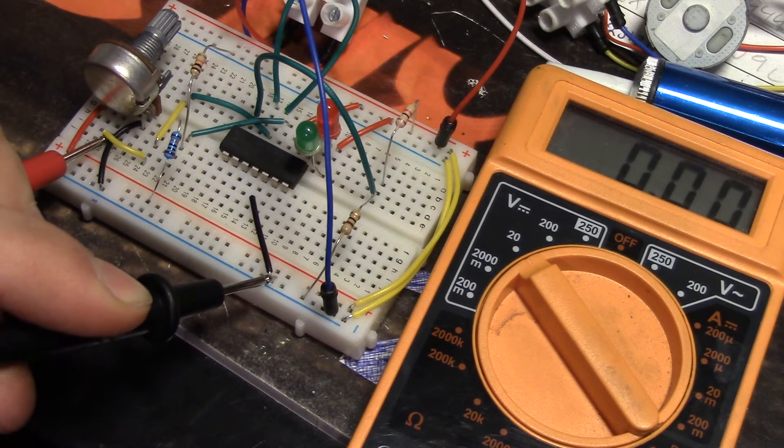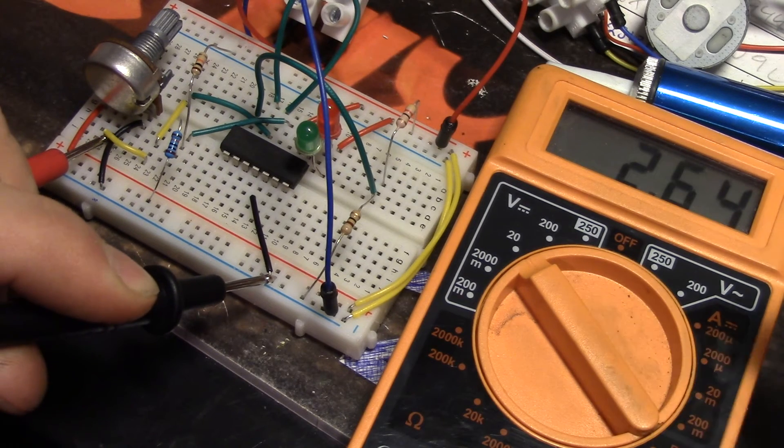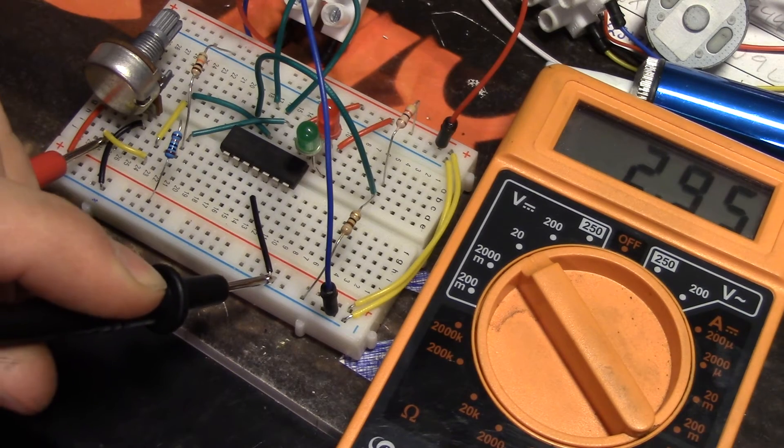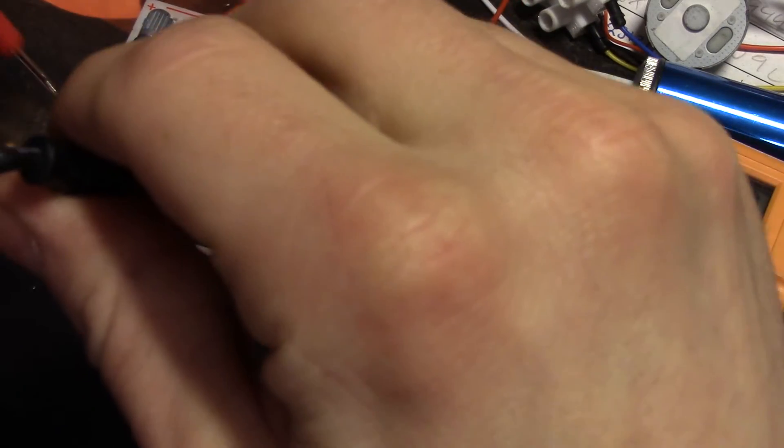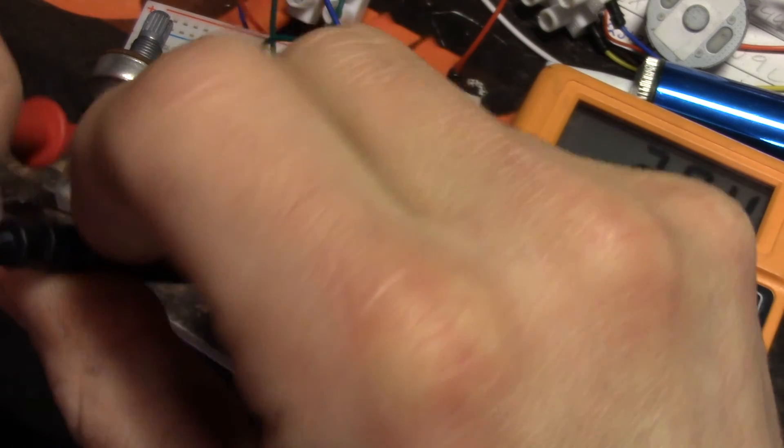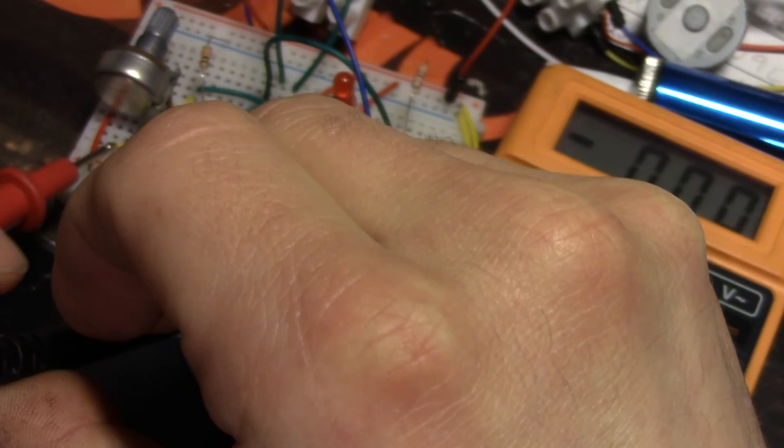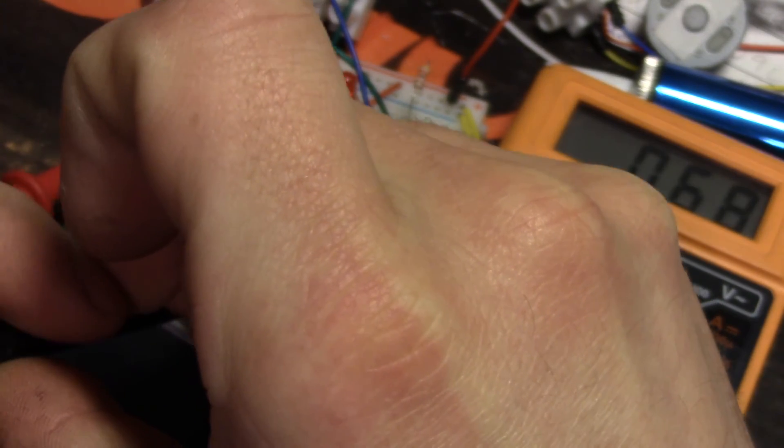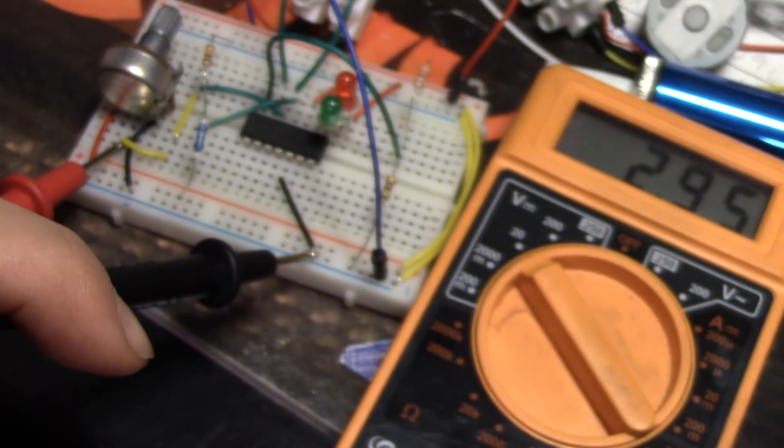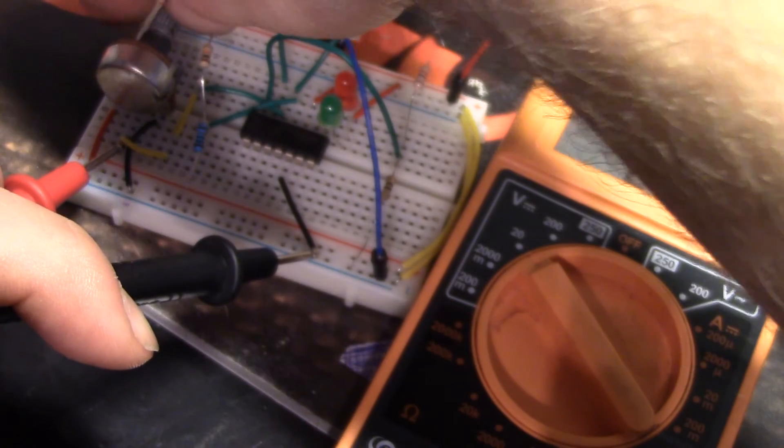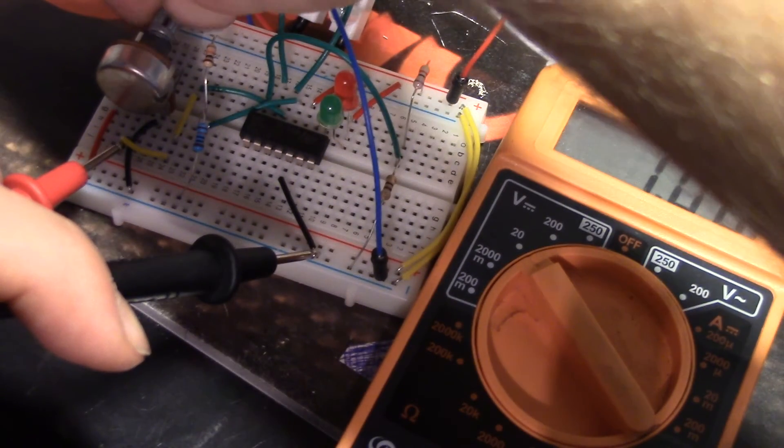So, for the moment, you can see we have a little unstable voltage. There we have it. So, three volts, and if I turn this down,